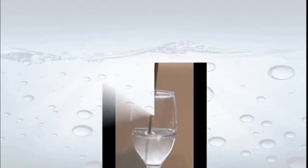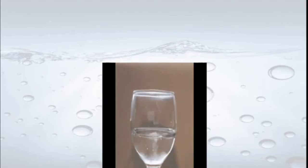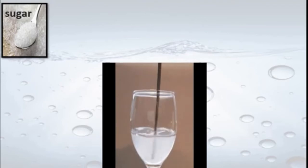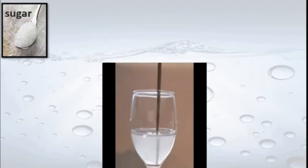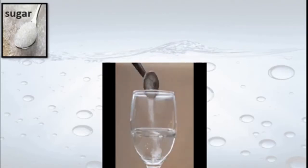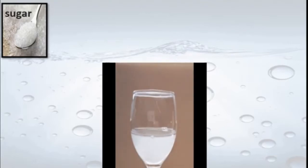Now we are going to do one experiment. I have taken here a glass, water, and a stirrer. I have put one spoonful of sugar in the water and I am stirring it continuously. Within some time the sugar disappears — it dissolves in the water. If I tasted the water, it is sweet.